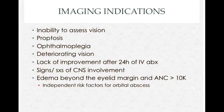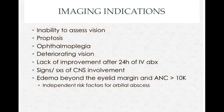Indications for imaging include: inability to assess vision because the patient can't open their eyes, proptosis — since something is pushing the globe forward and you need to know what it is — ophthalmoplegia, worsening vision, failure to improve after 24 hours of IV antibiotics, or signs of CNS involvement. One study also showed that edema beyond the eyelid margin combined with an absolute neutrophil count above 10,000 is an independent risk factor for orbital abscess.